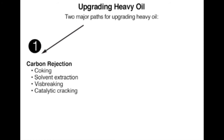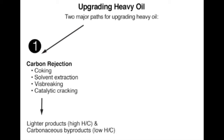By rejecting carbon from the heavy oil — say, through coking, making a carbon-rich byproduct coke — the remainder product becomes lighter, or has a high hydrogen-to-carbon ratio. Or through solvent extraction, as in de-asphalting, rejecting asphalt makes the de-asphalted oil lighter.